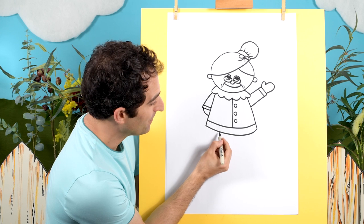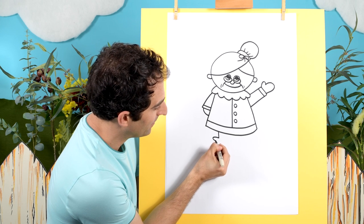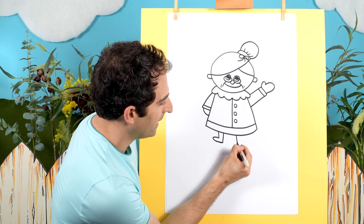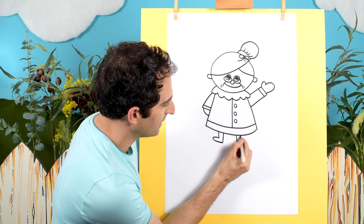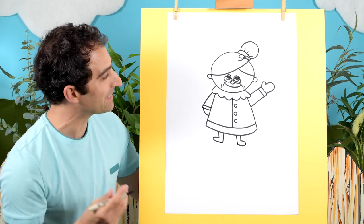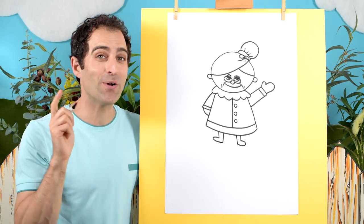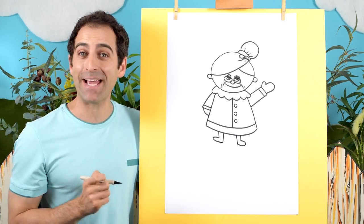I think she needs some feet. So let's draw a little line here. It goes down. Makes a little boot. And one over here. There we go. Doesn't that look great? I think she needs some color though. So I'll go fast now. Then we can come back and see how she finished up.